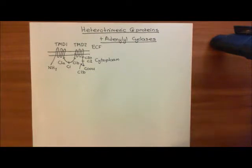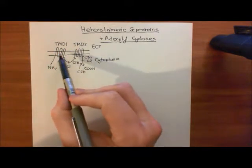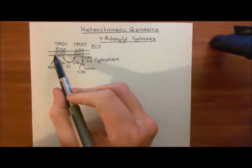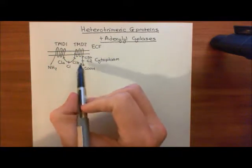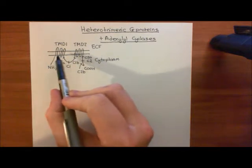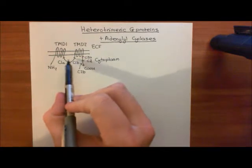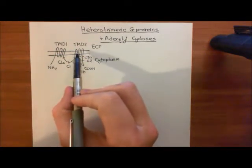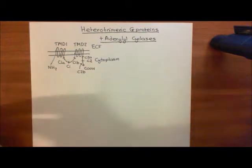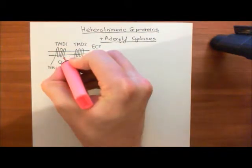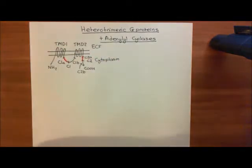Which portion is the actual active enzyme? Even though the transmembrane domain portions look impressive, they are actually accessory — they serve just to implant the whole thing at the plasma membrane. It is the C1A domain and the C2A domain which are the active enzyme, going to catalyze the adenylyl cyclase reaction.